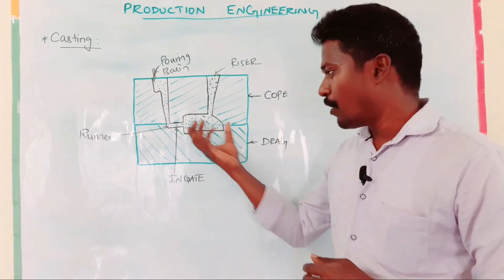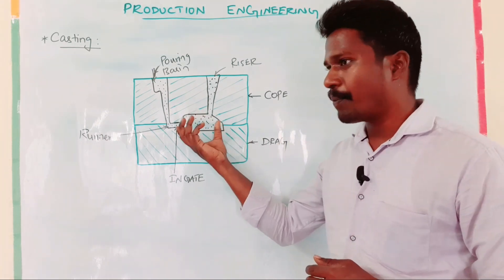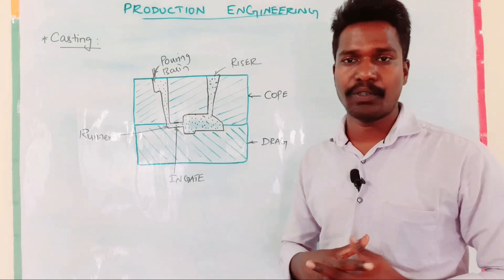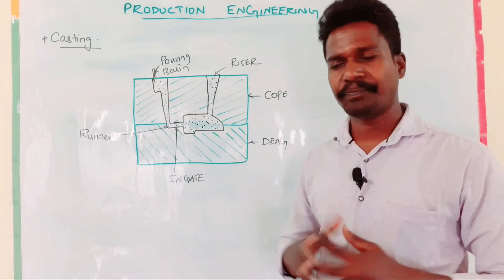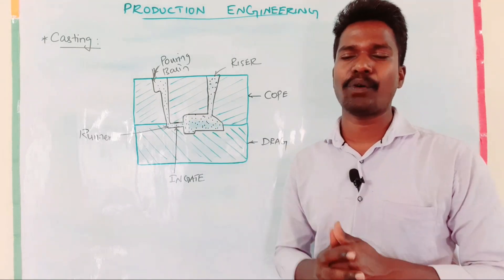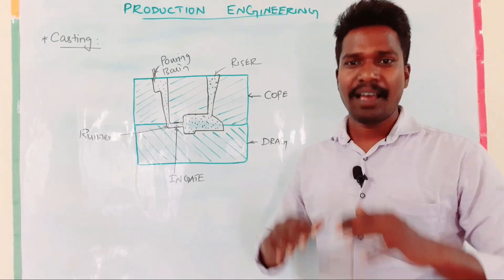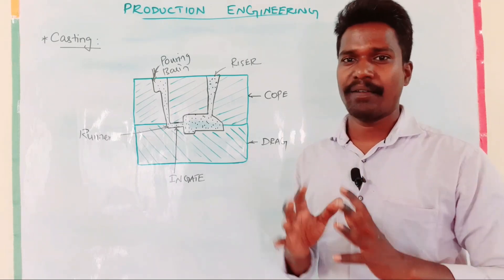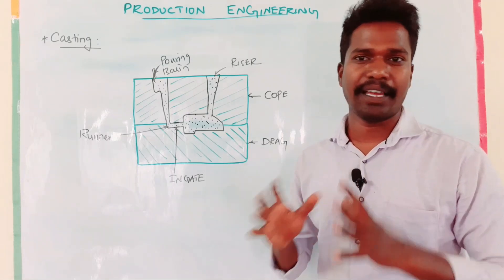Casting is a product. The product is a casting. Casting takes place in a location called a Foundry. Foundry is a place called Foundry.